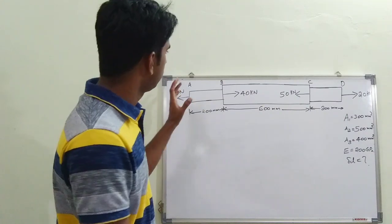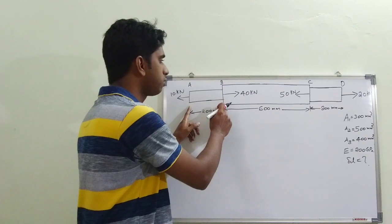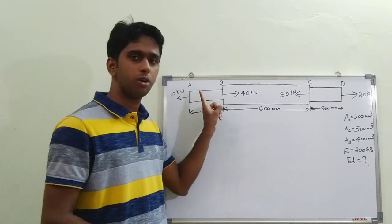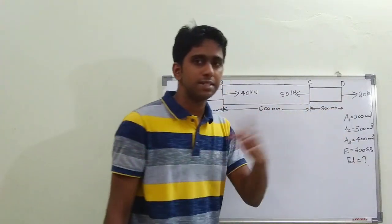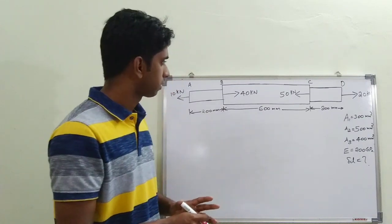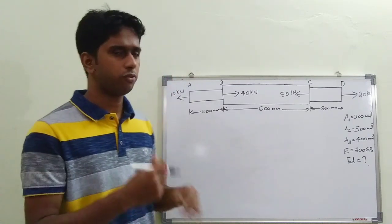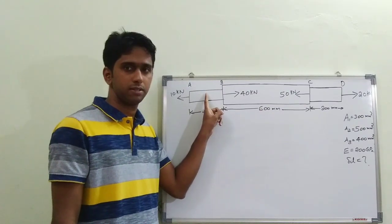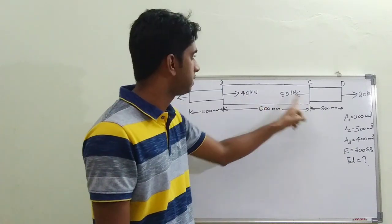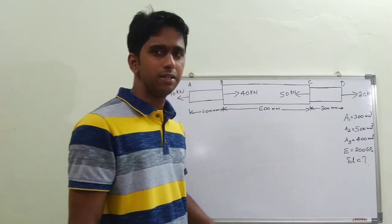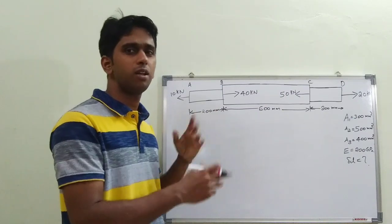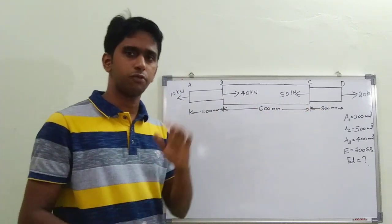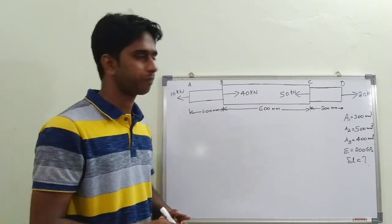The Principle of Superposition says that if we have a case like this, we can determine the deformations of individual sections separately and simply add them. So what we are going to do is find the deformation of sections AB, BC, and CD individually and then club them together to get the total deformation. The major step in this problem is to determine what load is shared by each of these sections separately — that is the first and most important step.